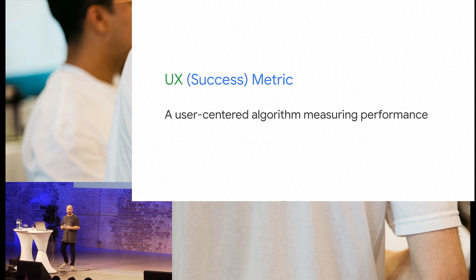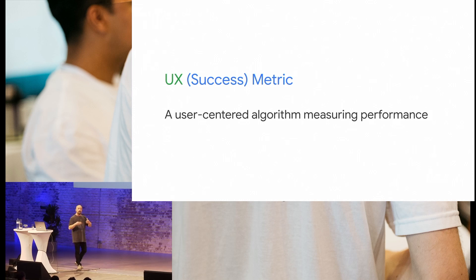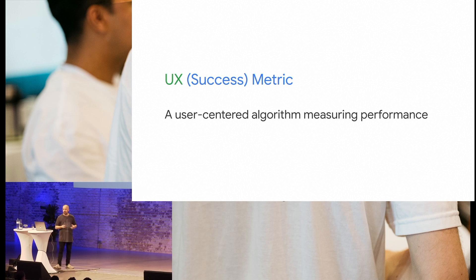A UX success metric is a user-centered algorithm to measure performance. Here we're looking at the behavioral, the user side, and we want to know how our products are doing. That's important because as we mature in the field and want UX to be an equal partner in product development together with PM and Eng, we also need to bring UX to a place where we have metrics that show if we're successful with what we're doing and if our products are doing well for users.